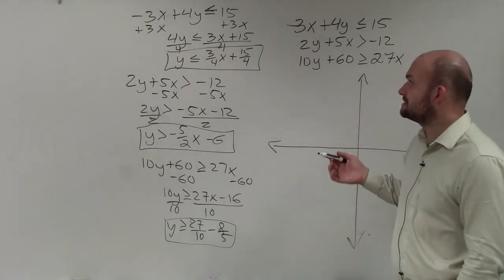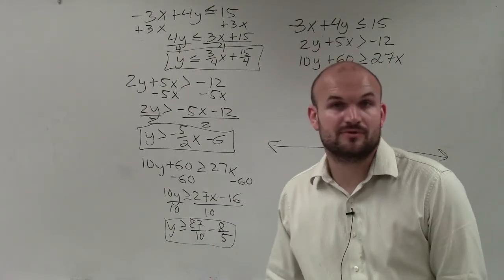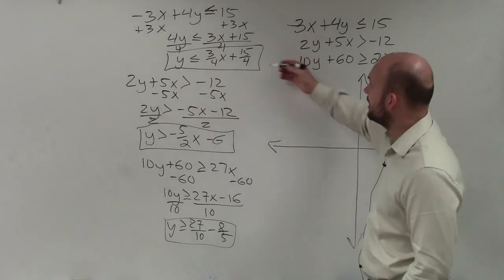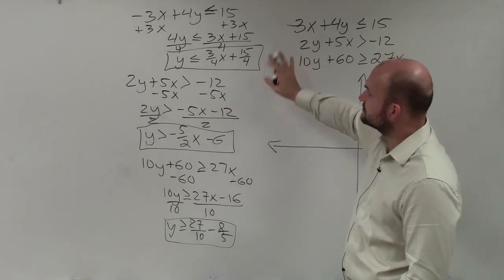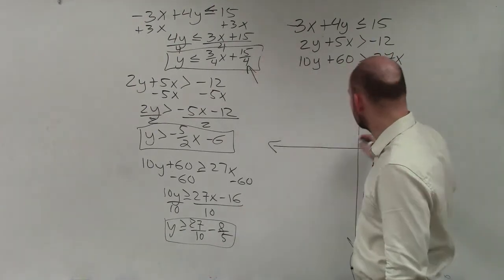But what I would recommend to you is one using a graphing or computer application. And the other thing is we can just estimate. So 4 goes into 15 almost 4 times. But it goes in there 3 and 3 fourths, which would be like 3.75. So I'm going to estimate the y-intercept.